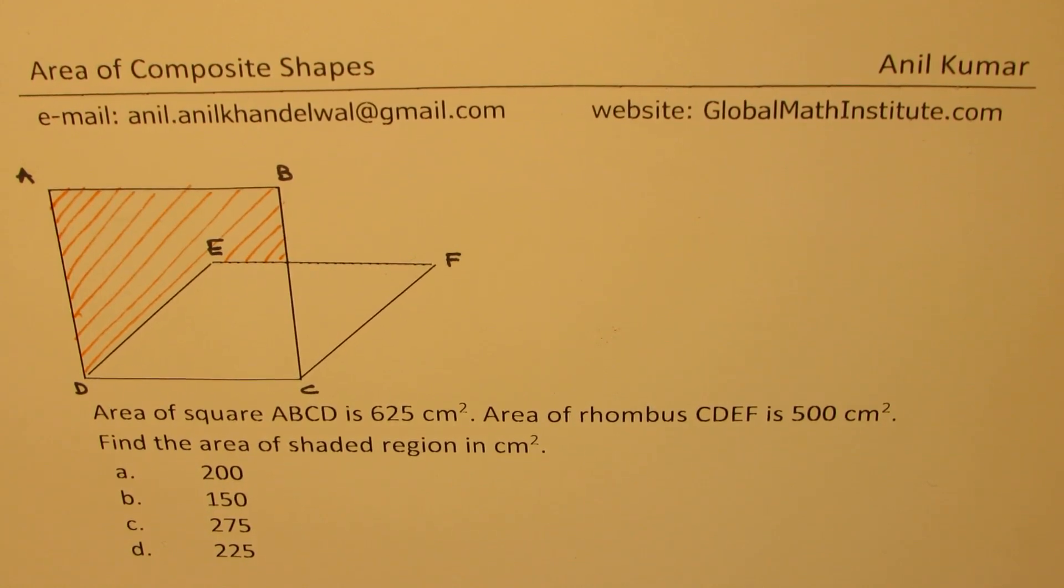The question here is: area of the square ABCD is 625 centimeter square, area of rhombus CDEF is 500 centimeter square, find the area of shaded region in centimeter square. Four choices are given to you. You can always pause the video, answer the question, and then look into my suggestions.